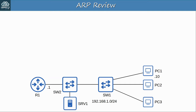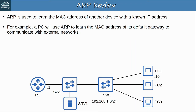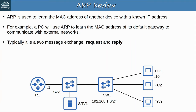Before dynamic ARP inspection, let's quickly review ARP itself. ARP is used to learn the MAC address of another device with a known IP address. For example, a PC will use ARP to learn the MAC address of its default gateway to communicate with external networks, and also the MAC address of any other device on the local network. Typically it's a two-message exchange consisting of an ARP request and then a reply.